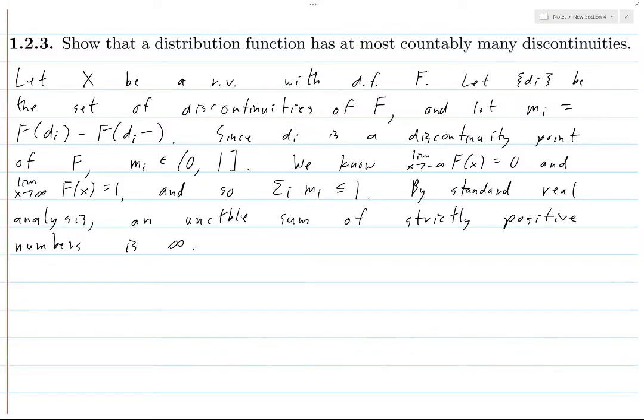But you can obviously have a countable sum of positive numbers and get a finite number. But anytime you have an uncountable sum of strictly positive numbers, it doesn't matter how quickly those positive numbers decay to zero, the sum will always be infinity.